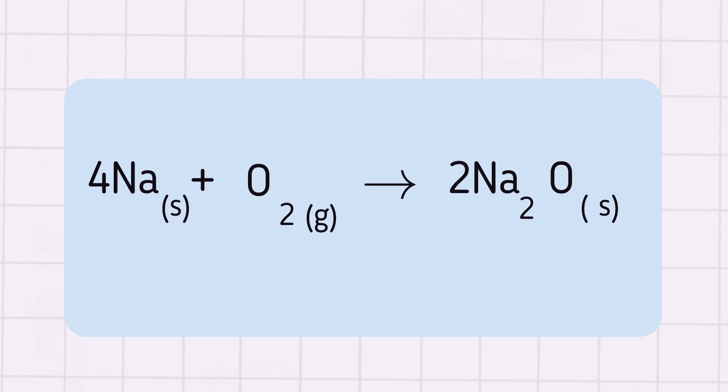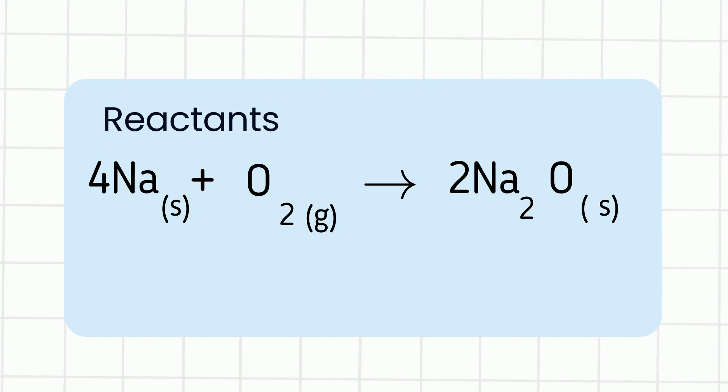To begin with, the reactants will be found on the left of the arrow. This is what you're going to combine together. And the products will be on the right, which will be what you're going to produce. The arrow tells you the direction of the equation and what it will yield, in other words, what it's going to create. So again, reactants on the left, products on the right.